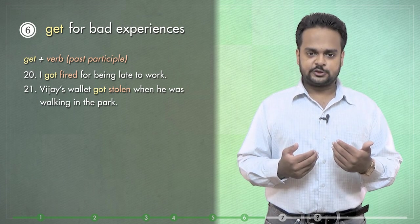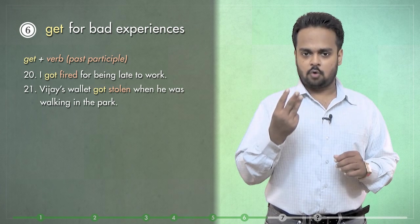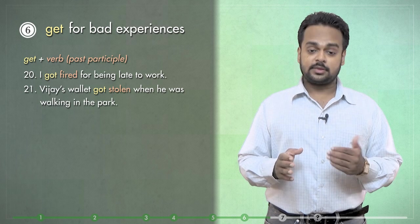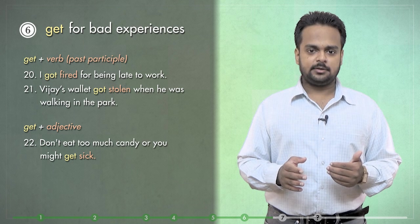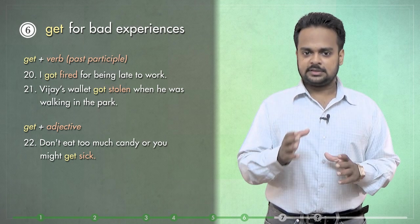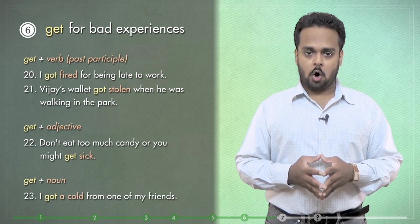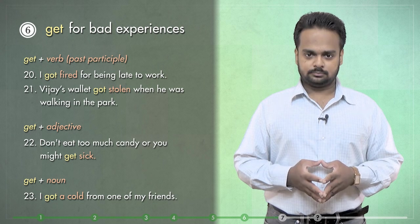The words fired and stolen are verbs in the past participle or the third form. But you can also talk about bad experiences with adjectives. For example, don't eat too much candy or you might get sick – sick is an adjective. Or nouns such as, I got a cold from one of my friends – a cold is a noun. Alright,